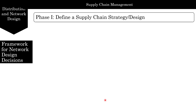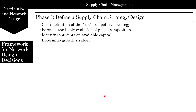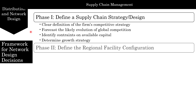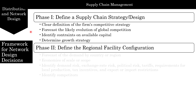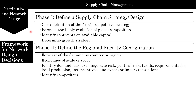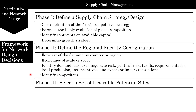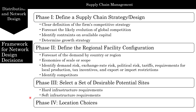To summarize the phases: Phase one defines the supply chain strategy — including the firm's competitive strategy, forecasting global competition, identifying capital constraints, and determining a growth strategy. Phase two defines the regional facility configuration — forecasting demand by country or region, identifying economies of scale and scope, assessing demand, exchange rate, and political risks, and identifying tariffs, tax incentives, and import/export restrictions. Phase three selects desirable potential sites based on hard and soft infrastructure requirements. Phase four makes the final location choice based on factor costs and logistics costs.